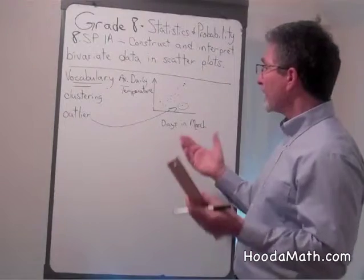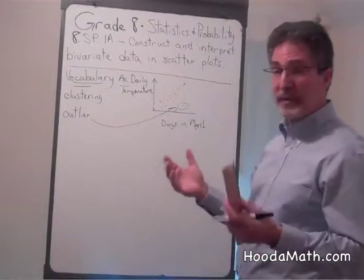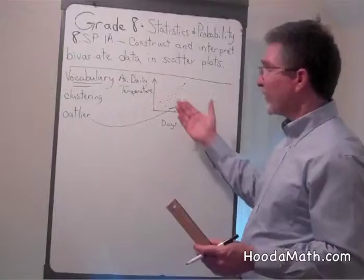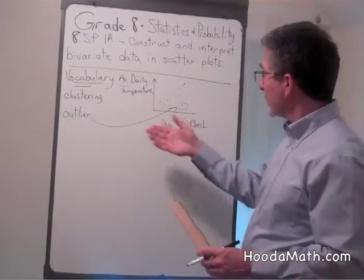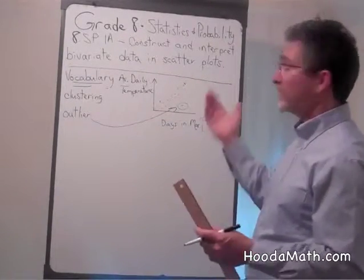So, outliers are pieces of data that are unusual or vary quite a bit outside of the cluster in a scatter plot.